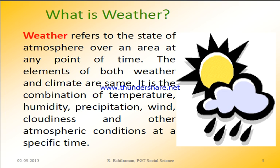What is weather? Weather refers to the state of the atmosphere of an area at any point of time. If we study the atmosphere at any point of time, that is weather. If we study the atmosphere over a long period, that is climate. The elements of both weather and climate are the same — it is the combination of temperature, humidity, precipitation, wind, cloudiness, and other atmospheric conditions at a specific time.